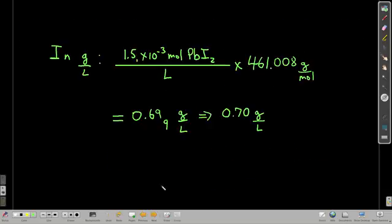Now, if we want grams per liter, all we have to do is convert moles of lead 2 iodide to grams using the molar mass. Again, this 461.008 grams per mole, that's what I calculated for the molar mass of lead 2 iodide. When we multiply that out, units of moles cancel, and we get grams per liter, and it's about 0.70 grams per liter. That's how you do that.